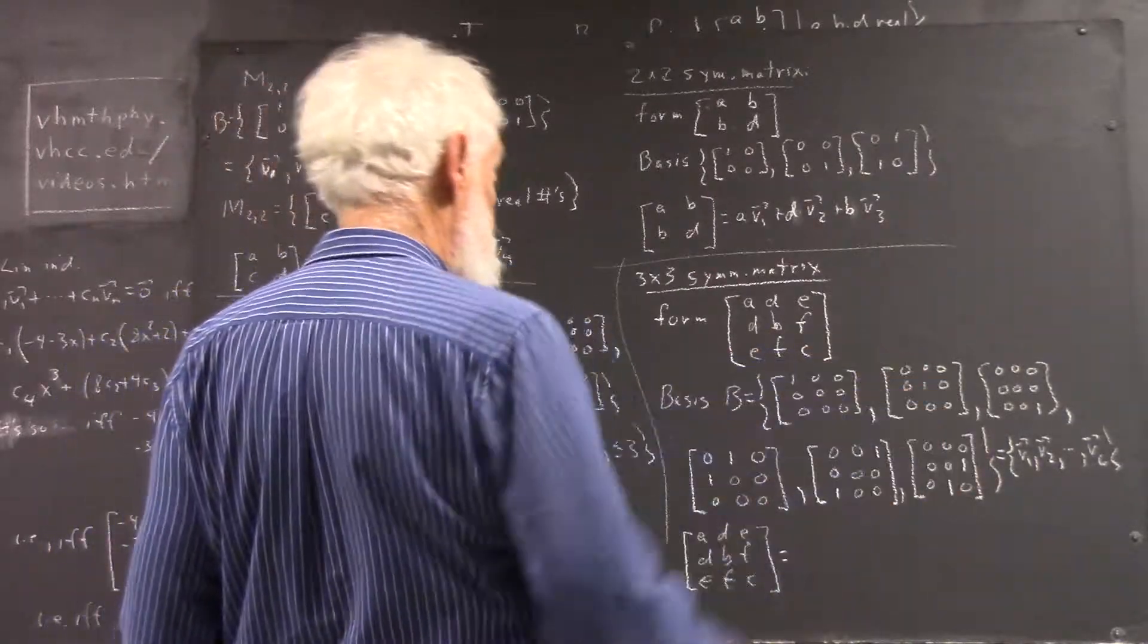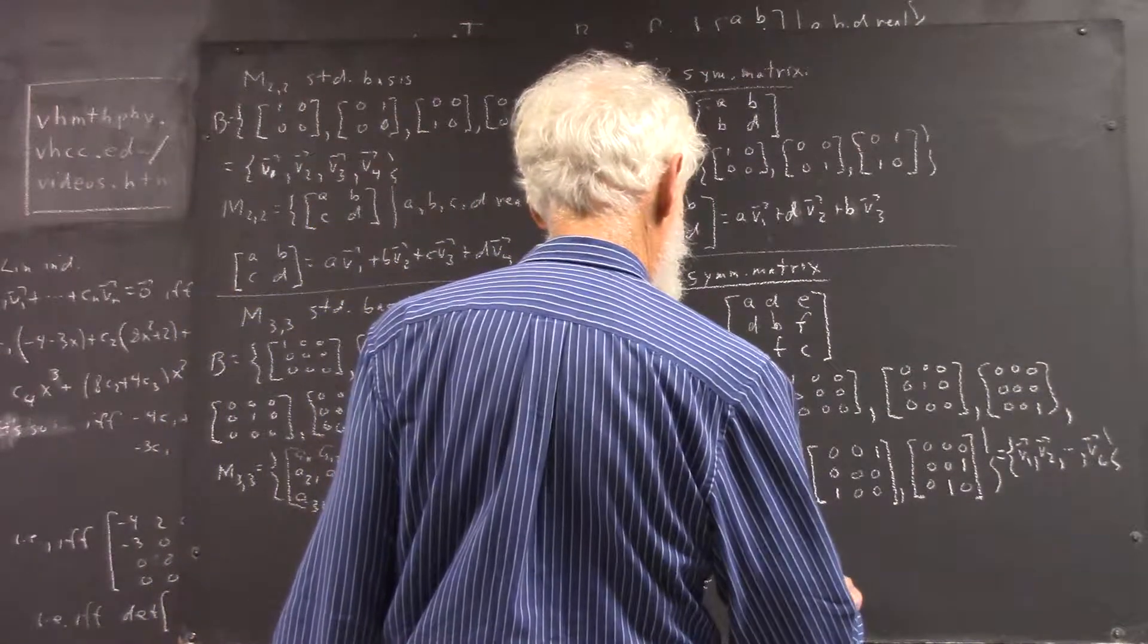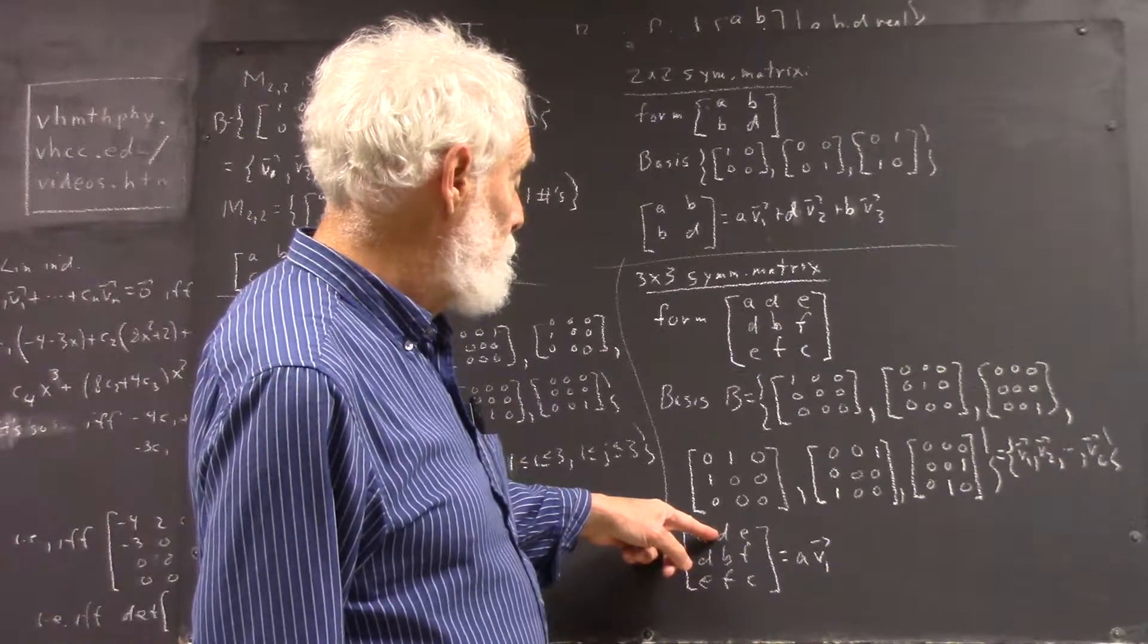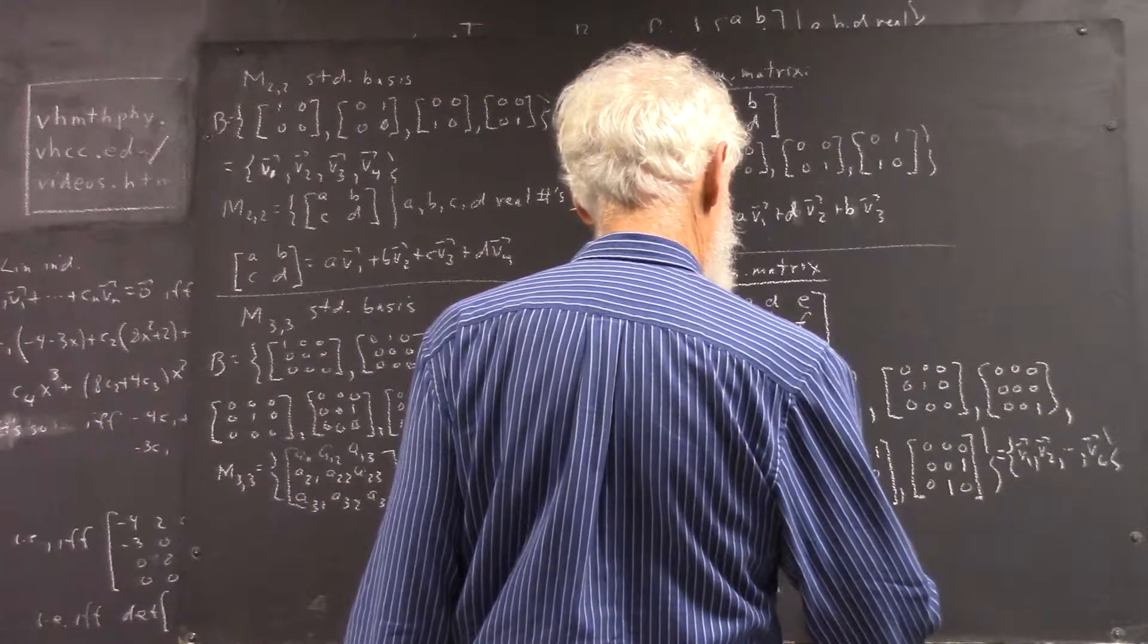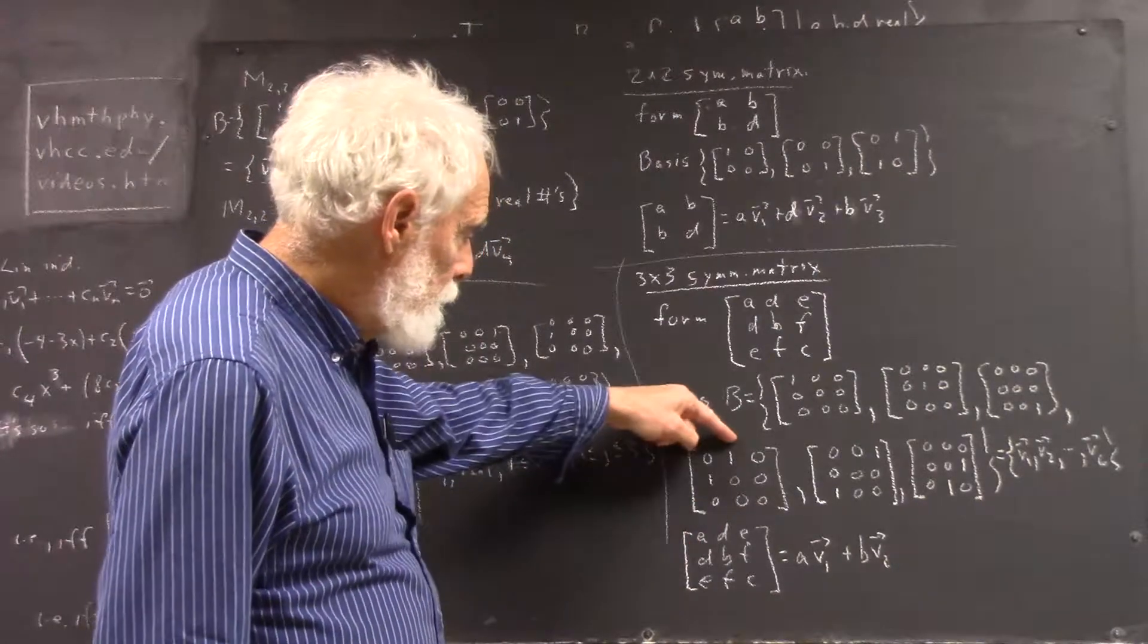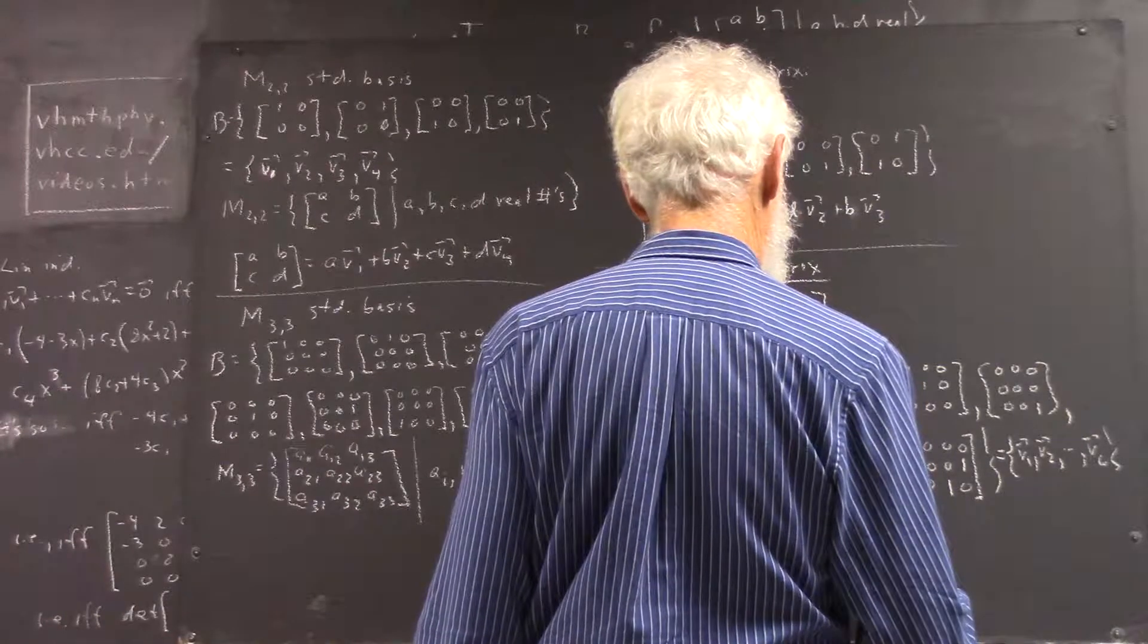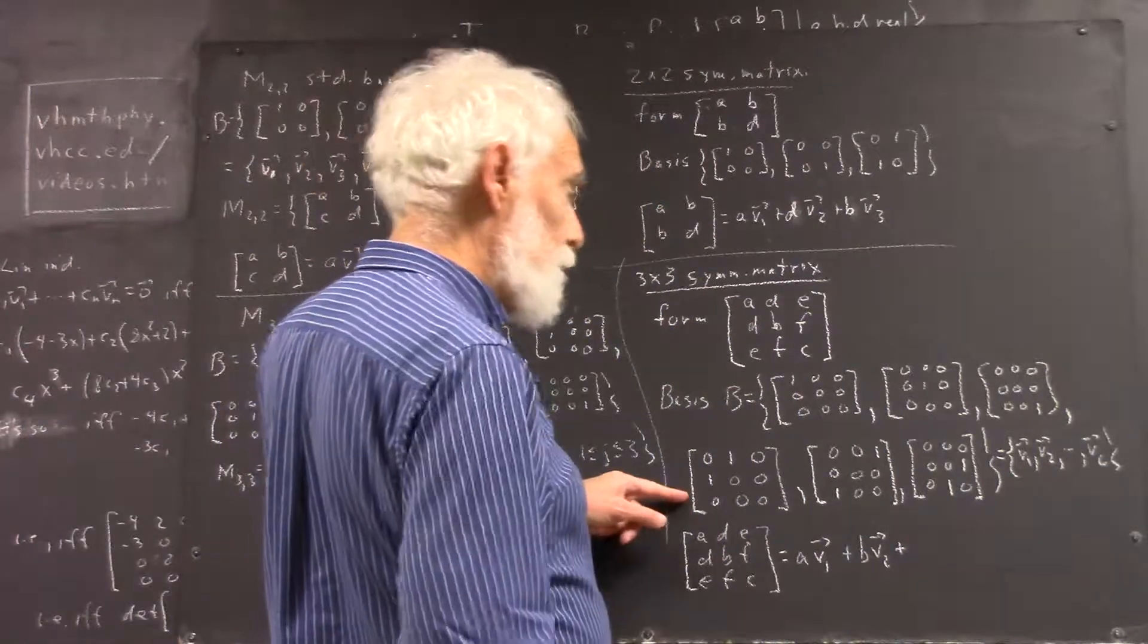Okay. So, here we have the matrix. How do I get this out of these? Well, I need an A here. The only way I'm going to get an A is multiply this one by A. So, it's going to be A, and I'm just going to write V1. Okay. Then I need a D here. How am I going to get a D here? Well, the only place where I don't have a zero here is here. So, that has to be D times V4, and of course, that also gives us the D here because I've got the ones here.